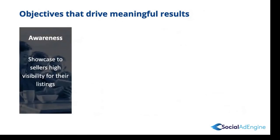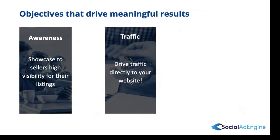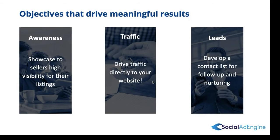Now at Social Ad Engine, we have objectives that drive meaningful results. Awareness is there to showcase to sellers high visibility for listings — think of this as a social billboard or park bench. The goal is to reach as many eyes as possible. Traffic drives directly to your website so people land there and explore — maybe you have a contact form they can fill out. Finally, my favorite objective is leads. The goal is to develop a contact list for follow-up and nurturing. I think of Facebook leads as prospects.